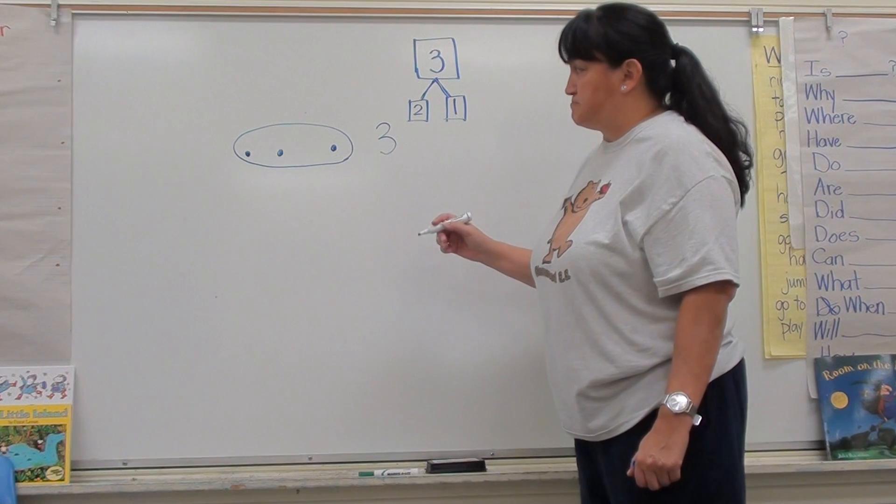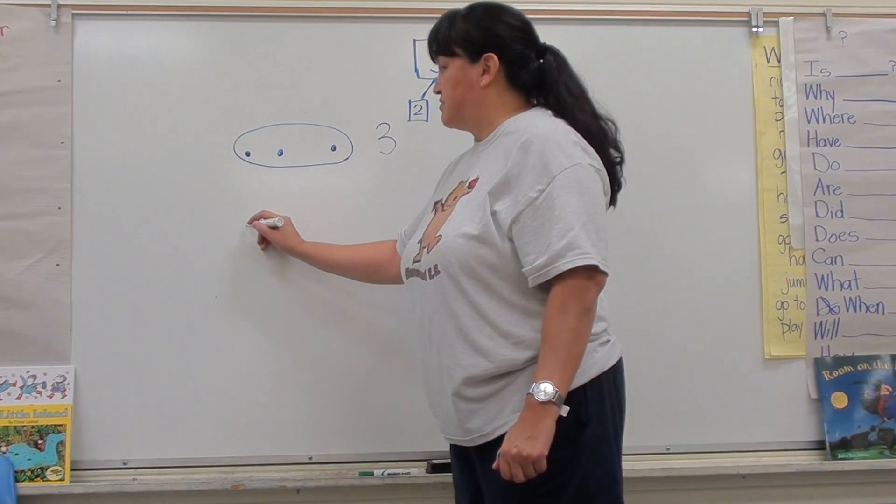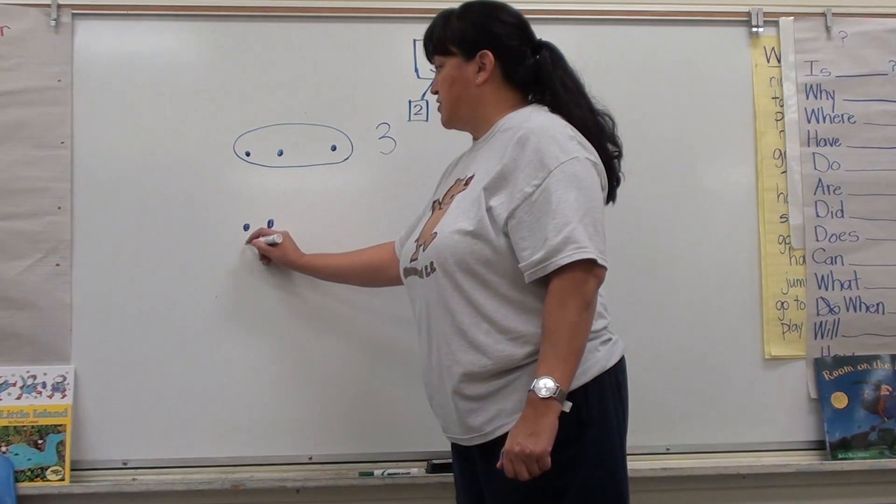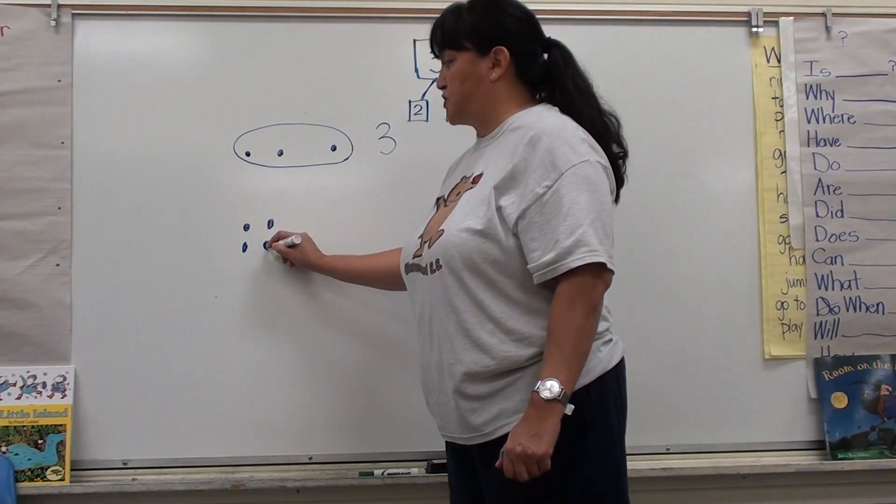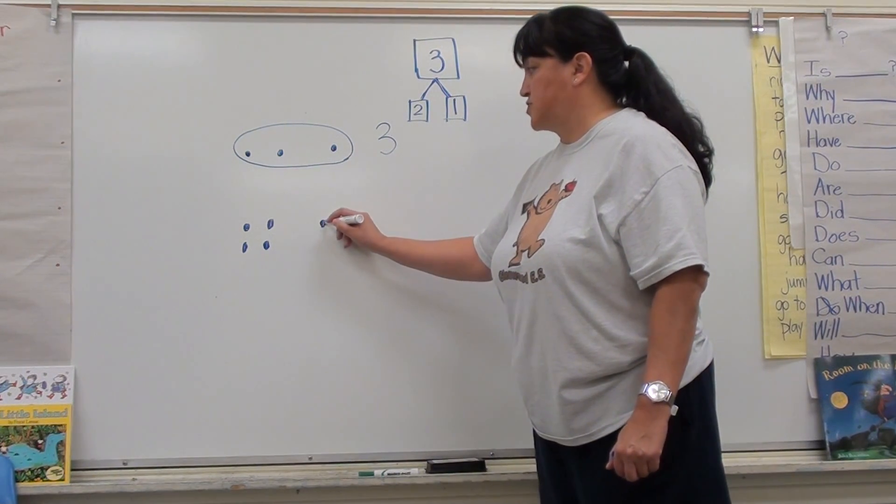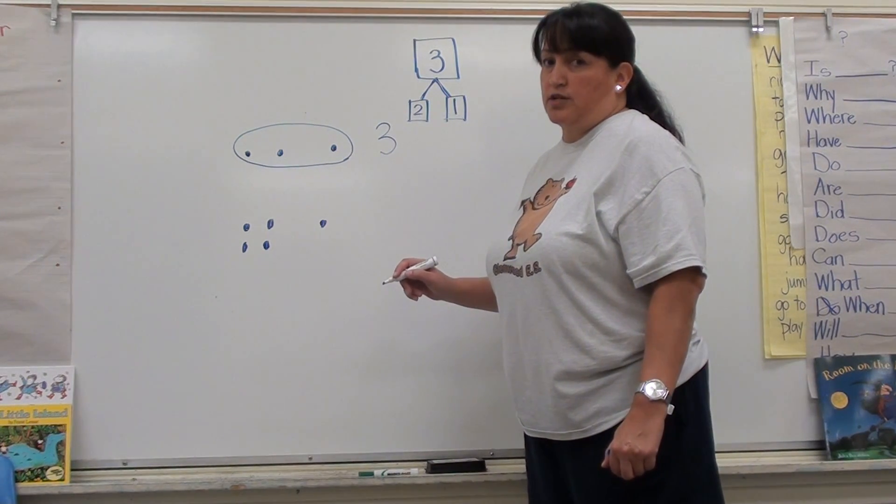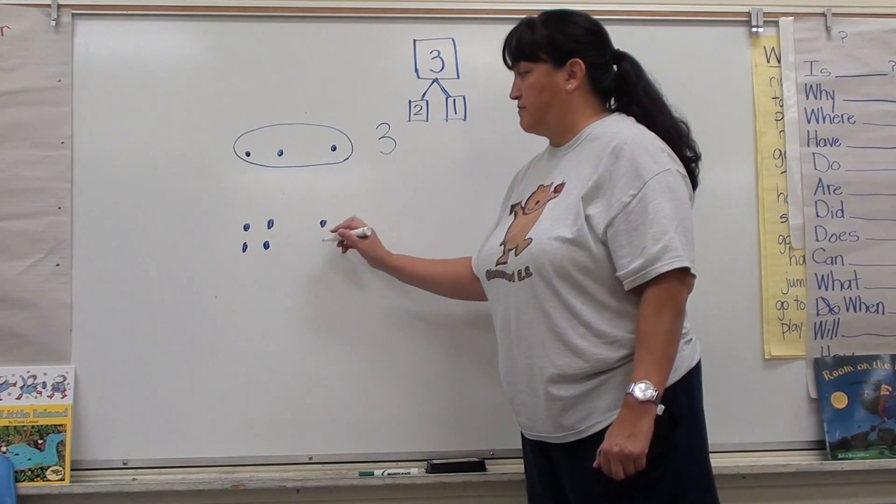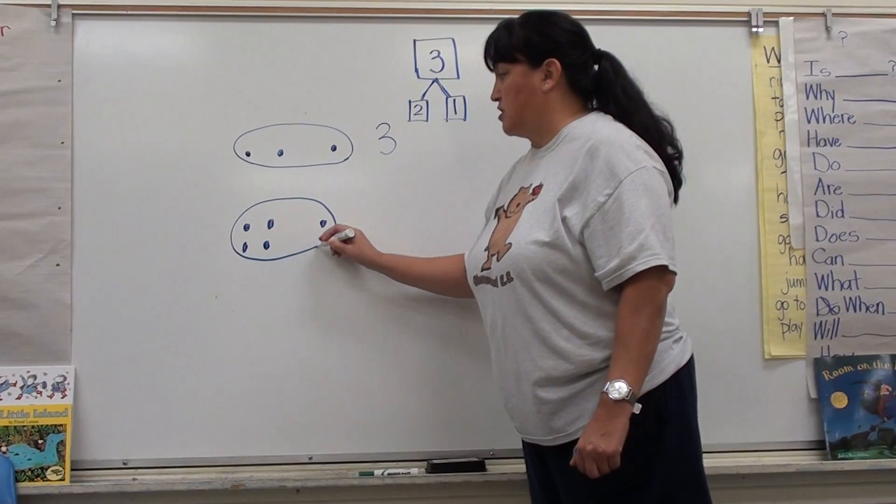Let's try that again. If I have one, two, three, four circles, and then I put one more circle, I would get one, two, three, four, five circles in all.